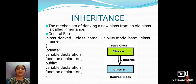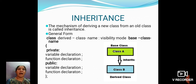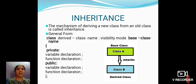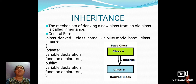This is a general form of inheritance. The syntax includes the class name, derived class name, visibility mode, and base class name, followed by an opening bracket containing private variable declarations, function declarations, public variable declarations, and function declarations, then a closing bracket and semicolon.